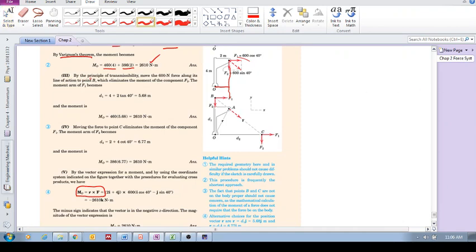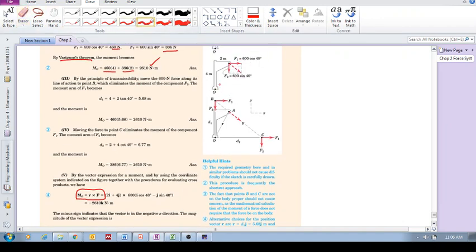Point number three. Now we can use the principle of transmissibility together with Varignon's theorem. What do we mean by this? We can actually take that force, which was broken up into its components, and because of the principle of transmissibility, because we're using rigid body mechanics, we can apply that force at B, anywhere along the line of action. And then the nice thing about this is that this F2 passes through the point of rotation. So F2, in this case, has no moment.